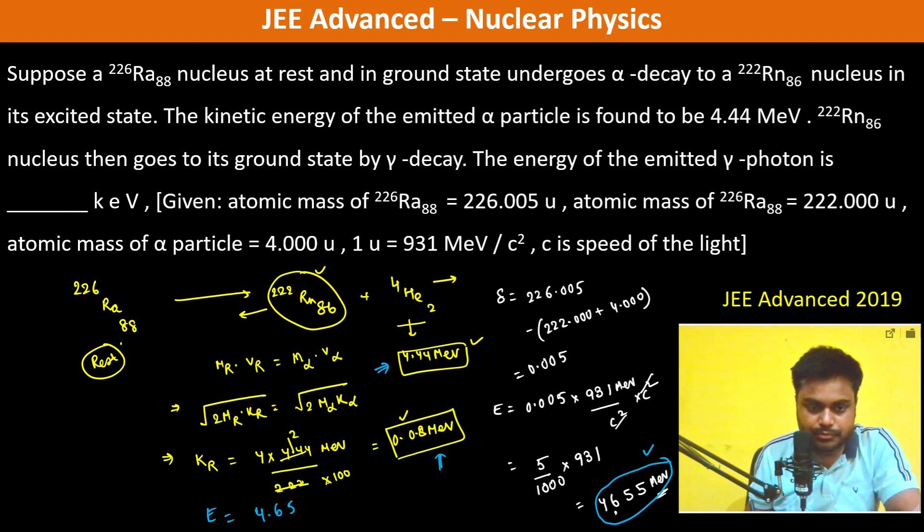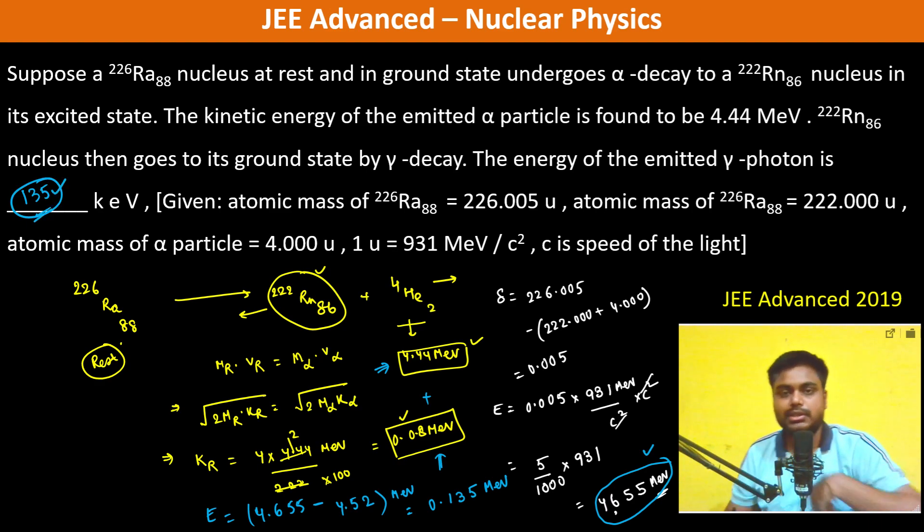4.655 minus, we add this, is going to be 4.52 mega electron volt. So this is basically 0.135 mega electron volt, which is 135 kilo electron volt. So therefore, 135 kilo electron volt is the answer.